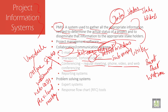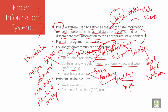The reporting system is defined as using one or more information management systems. It includes all the processes, procedures, and facilities used to generate reports using one or more of the information systems mentioned above.